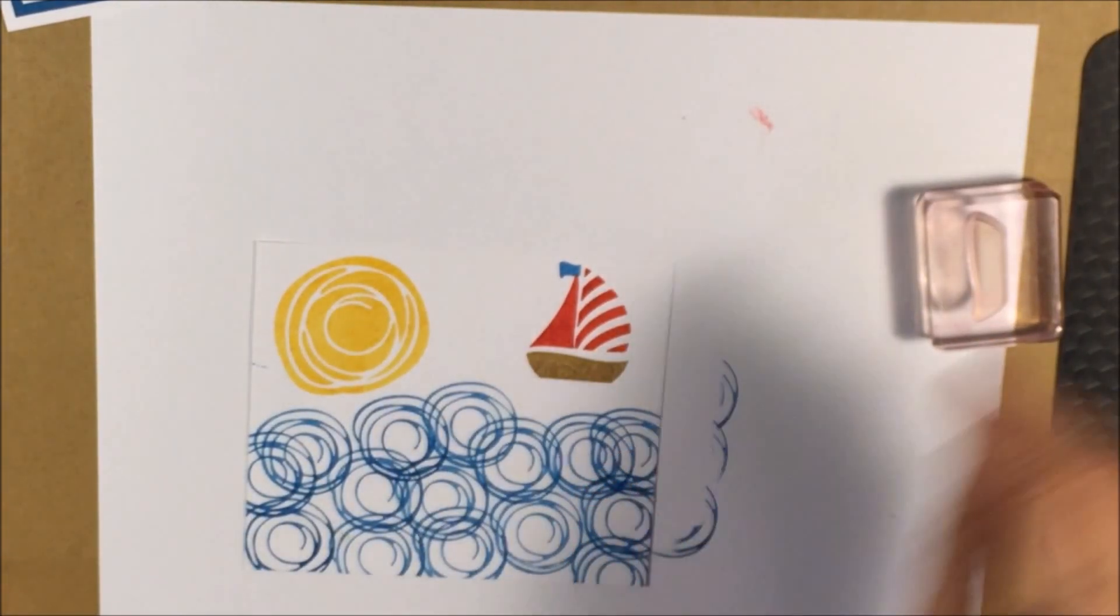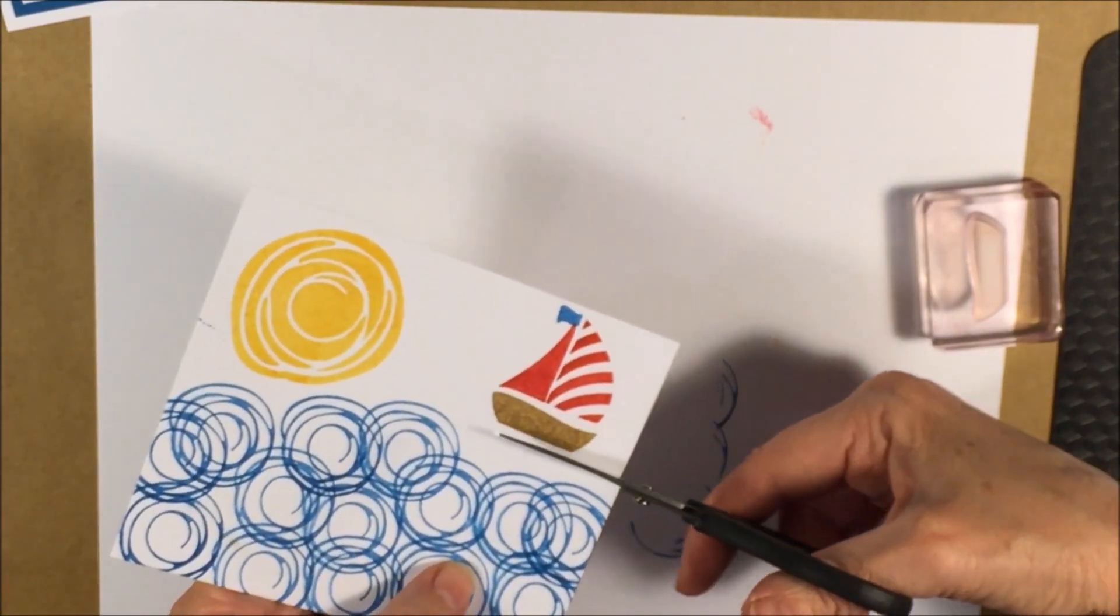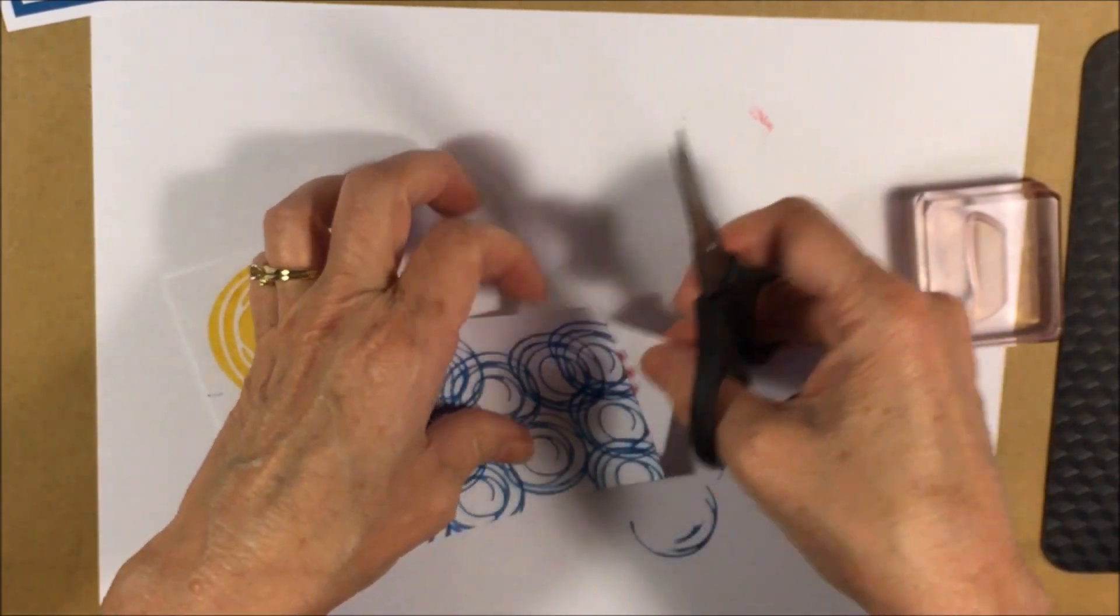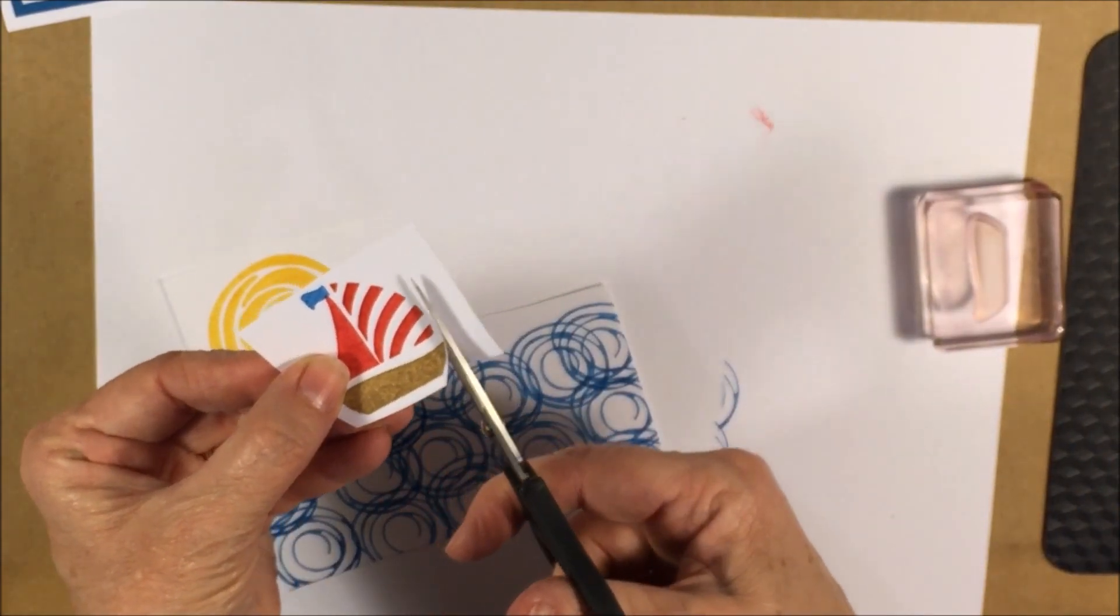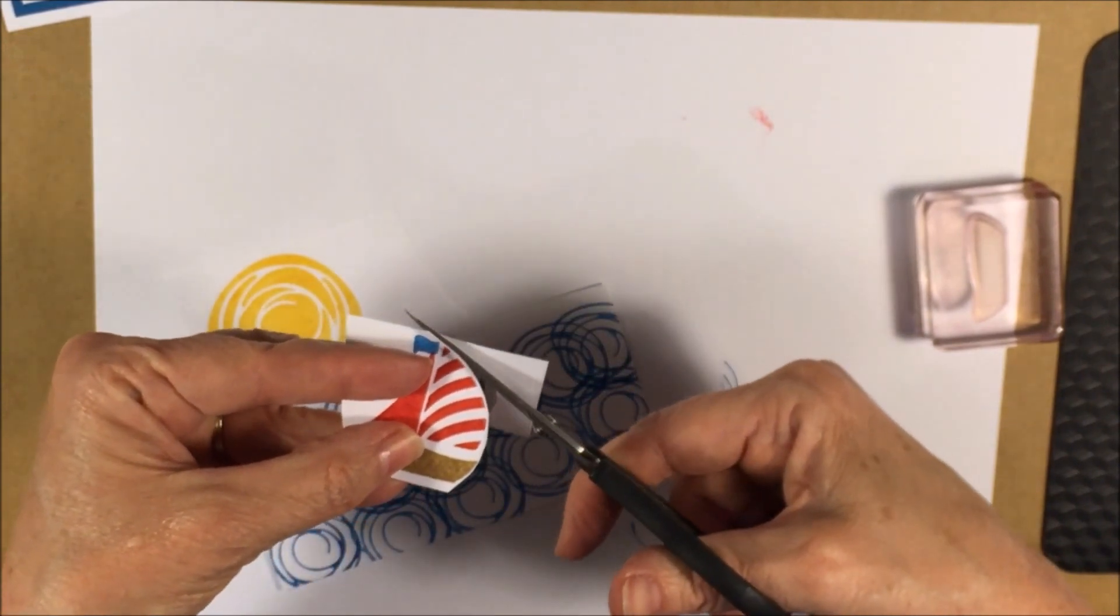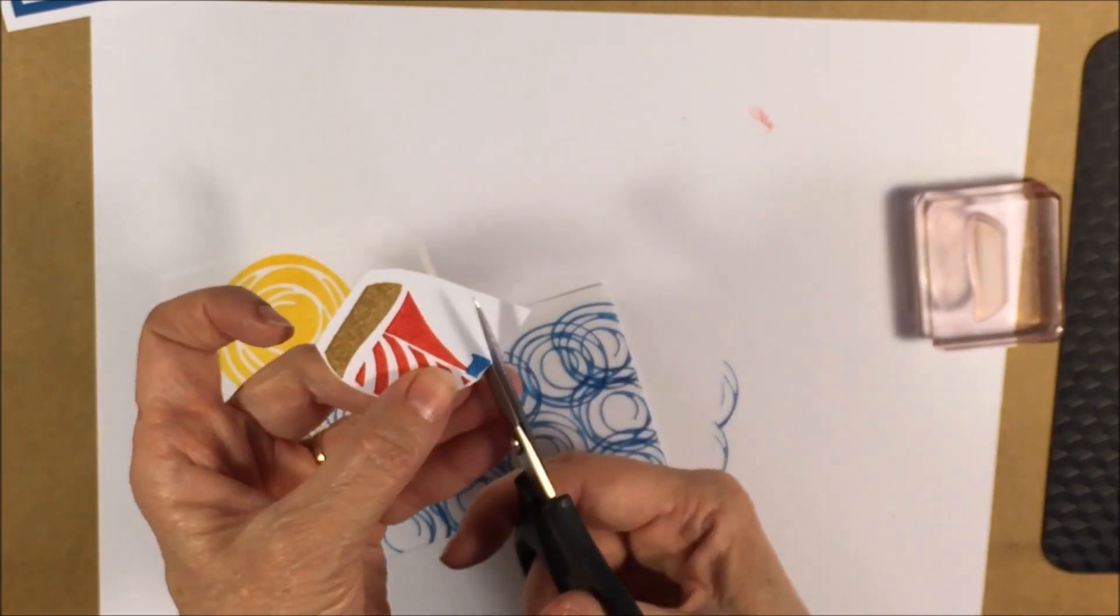The way I did the sailboat was I just fussy cut it. Real easy. When I fussy cut I leave a little bit of a white border just because you can never cut it exact. So if you leave a little bit of a white border it just looks like that's the way it's supposed to be. So I just fussy cut that out.